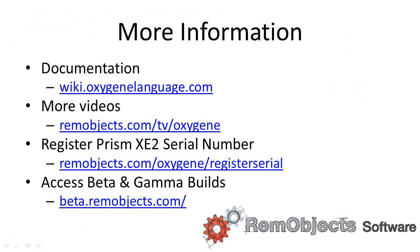This is just a touch of what's new in Prism and what's available in Prism XC2. For more information, check out wiki.oxygenlanguage.com for the latest documentation, and rimobjects.com/TV/oxygen for more videos. Register your serial number with RimObjects to get access to the latest beta builds, which lets you run Prism in Visual Studio 11 under Windows 8 and start doing Metro development. Thanks for your time — I look forward to seeing all the fabulous new development you'll be doing with Embarcadero Prism XC2.